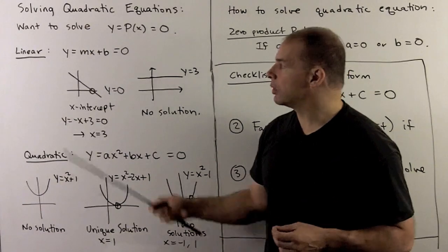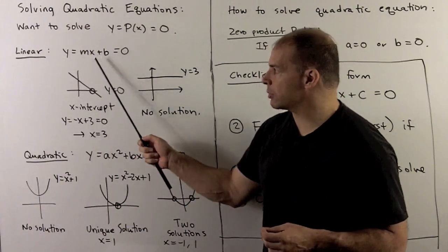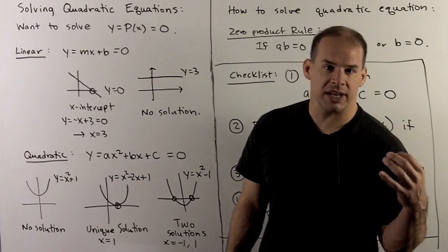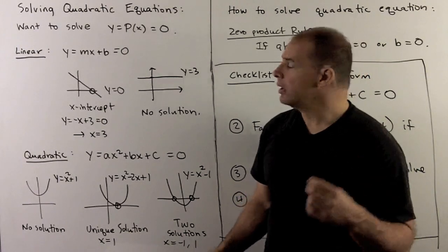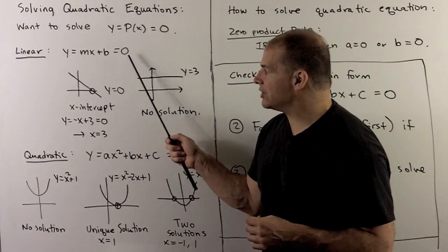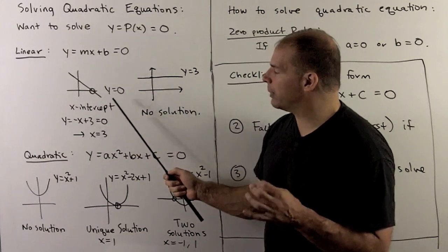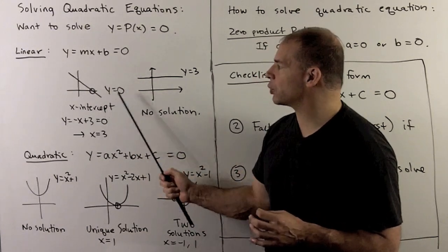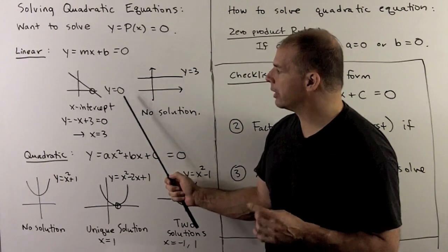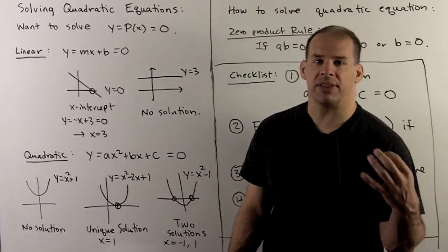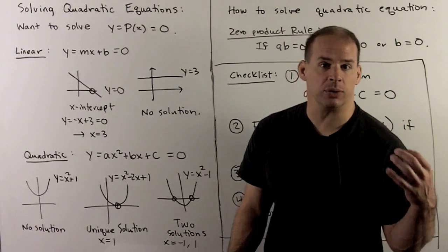Now, for a linear equation, equation of a line, we have y equals mx plus b, set that equal to zero. Here there are three things that can happen. If the slope of our line is non-zero, then we're going to have a unique solution to this equation, which is going to be our x-intercept. Remember the x-intercept is where y is equal to zero. So for instance, if I had y equals minus x plus three, set that equal to zero, we solve, we get x equal to three.